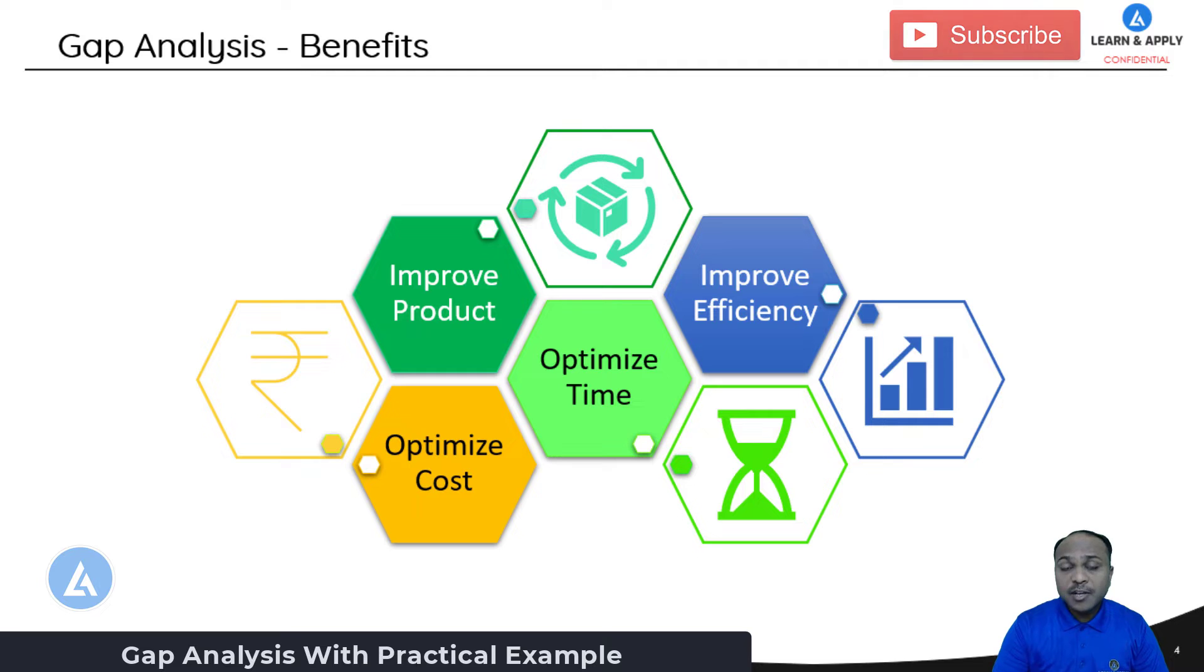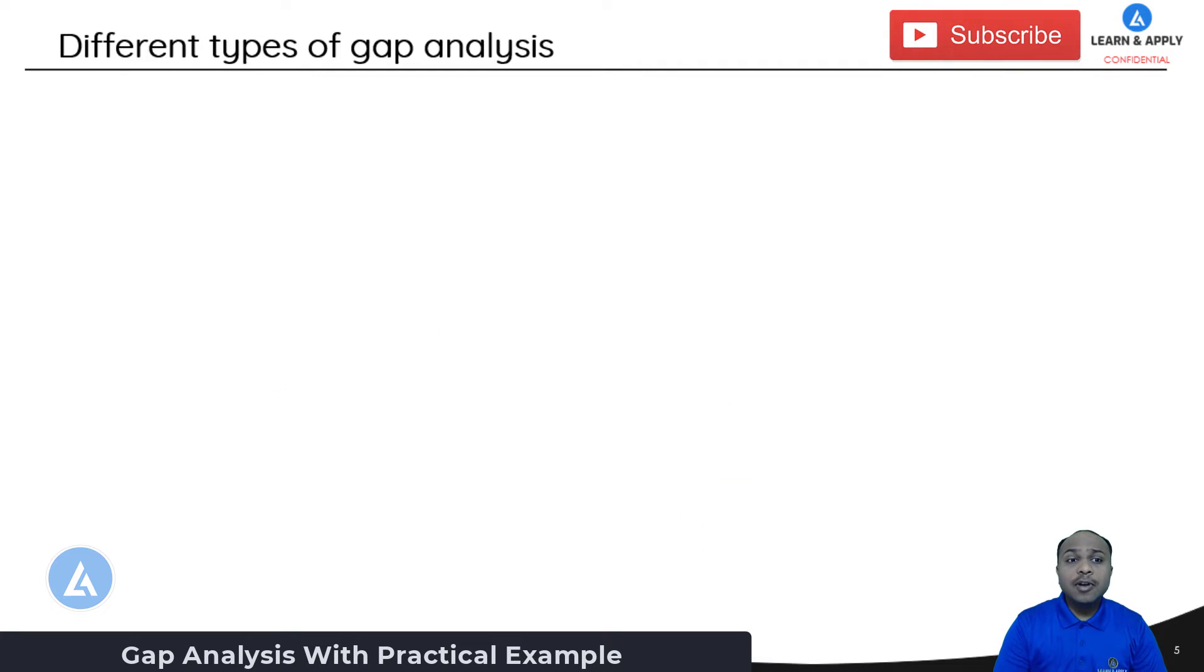After understanding what are the benefits of this gap analysis, let's look into some of the different types of gap analysis. There are mainly four types of gap analysis. The first one is performance gap. As we have already seen, what is the definition of the gap? It is a difference between what you are targeting against what is the actual situation. If you are talking about the performance gap, this is again the difference between planned versus actual. Or in other words, we can say actual versus expected performance.